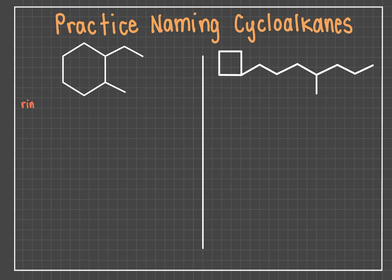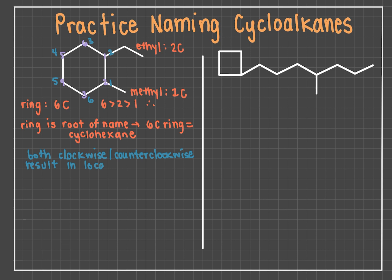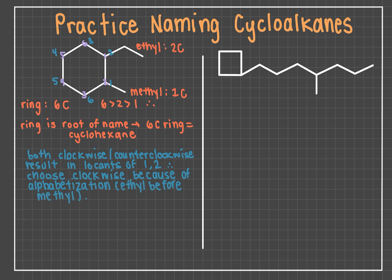In the first example on the left, the ring is larger than both acyclic alkyl chains. There are six carbons in the ring, two carbons in the ethyl group, and one in the methyl group. Therefore, the ring is the parent. A six-carbon ring corresponds with the name cyclohexane, so this will be the base of the molecule's name. Numbering the ring to give locants to the substituents yields two options: number the ring clockwise starting at the ethyl group, or counterclockwise starting at the methyl group. Because of alphabetization, ethyl will receive the lower number rather than the methyl, since both numbering systems give rise to locants of one and two. So the name of the molecule would be 1-ethyl-2-methylcyclohexane.